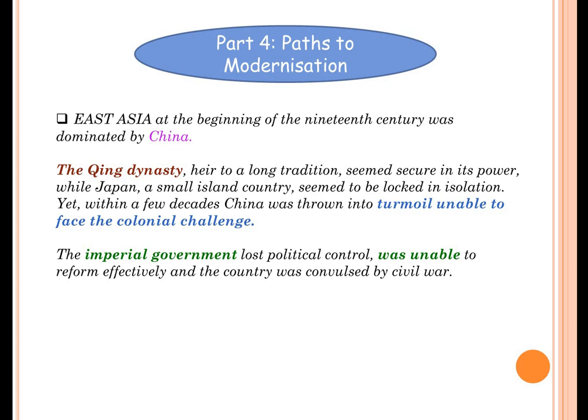We saw about the paths to modernization which took place in both China and Japan. There was a lot of difference between the approach to colonialism and imperialism in both China and Japan. Japan was totally in isolation. It was a small island country, which was very beneficial to staying in isolation. It was not affected by any other external factors. But that was not the case with China.